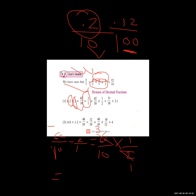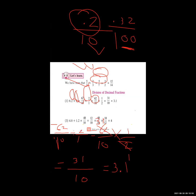We calculate: 2 threes are 6, and 2 ones are 2. So the answer is 31 upon 10. The denominator is 10, which means one zero, so we give a decimal point after one number. The answer is 3.1.